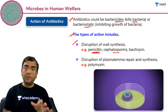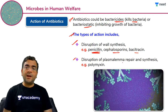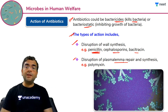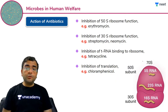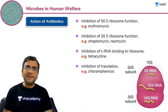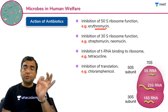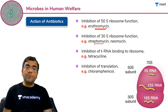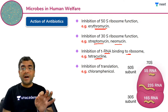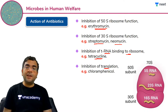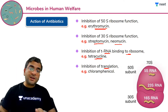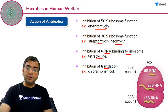Kuch antibiotics 50S ribosome ke function ko inhibit kar dete hain — jaise erythromycin — jo 50S ribosome ka bada subunit hai bacteria mein, uski growth ko rok dete hain. 30S ribosome function ki inhibition streptomycin aur neomycin karte hain. Tetracycline tRNA ko ribosome ke saath bind hi nahi hone deti. Kuch antibiotics translation ko hi rok dete hain. Yaane ki bacteria apna production kar hi nahi paa raha — jo pathogenic chemicals produce karenge, un cheezon par rok lagaa di gayi.